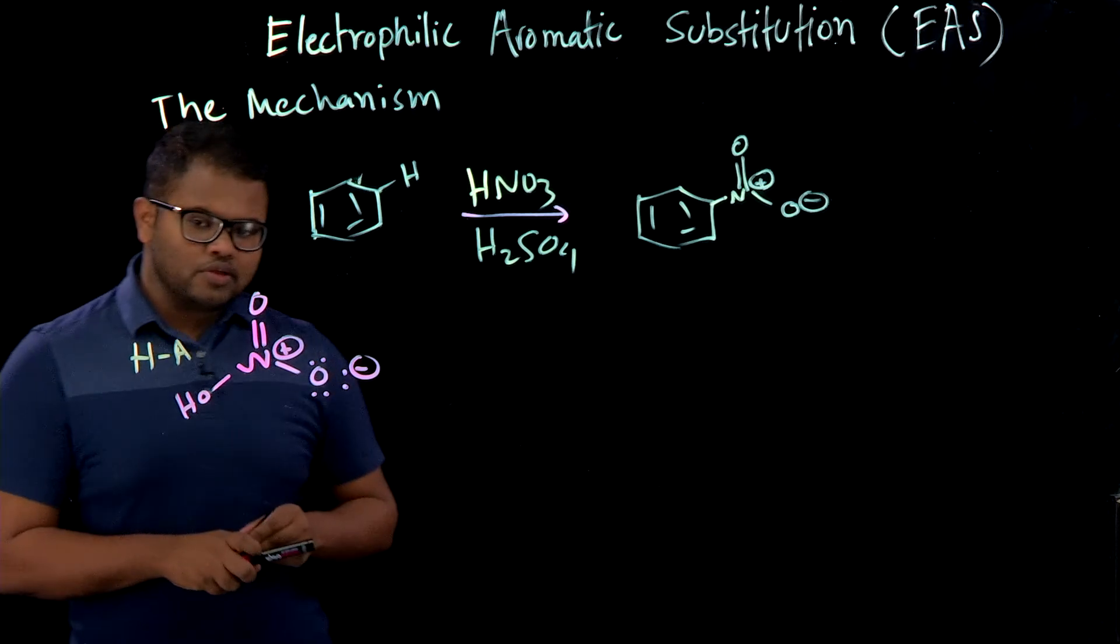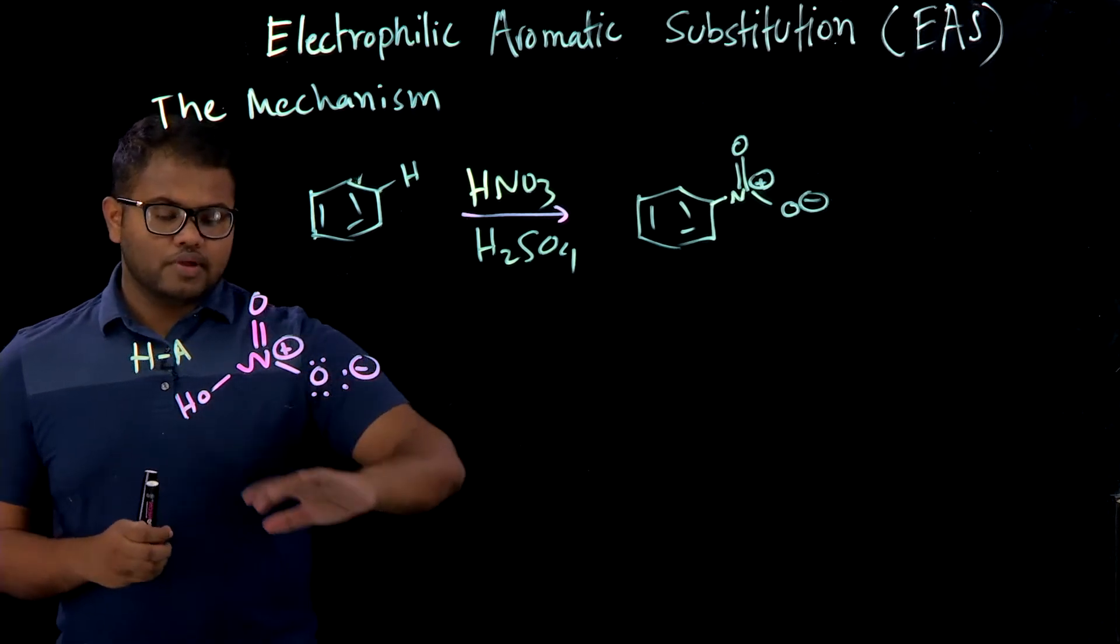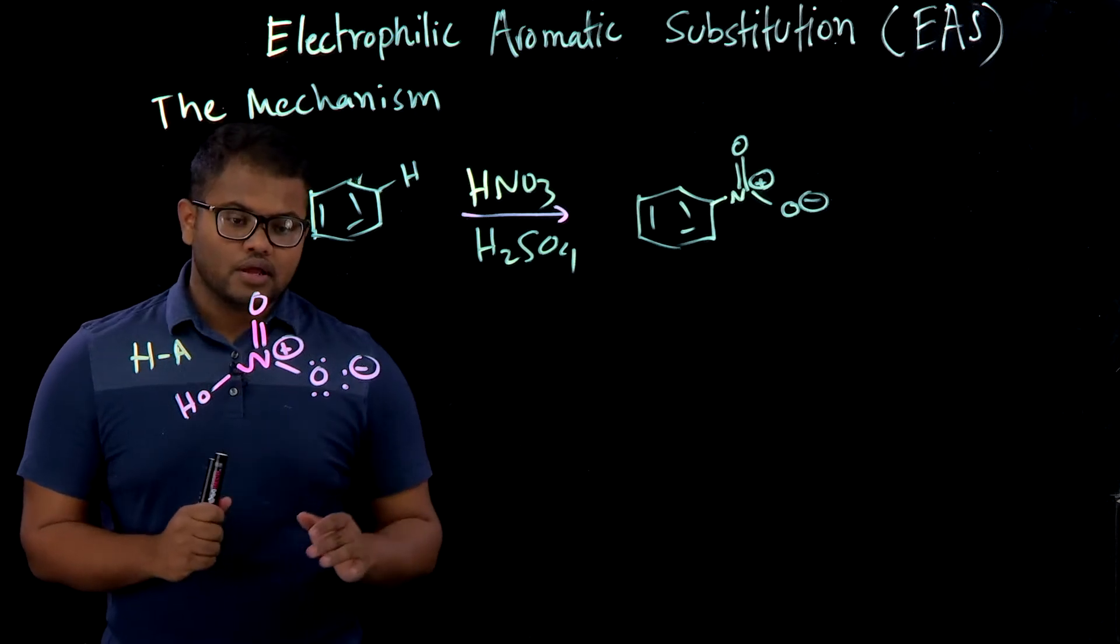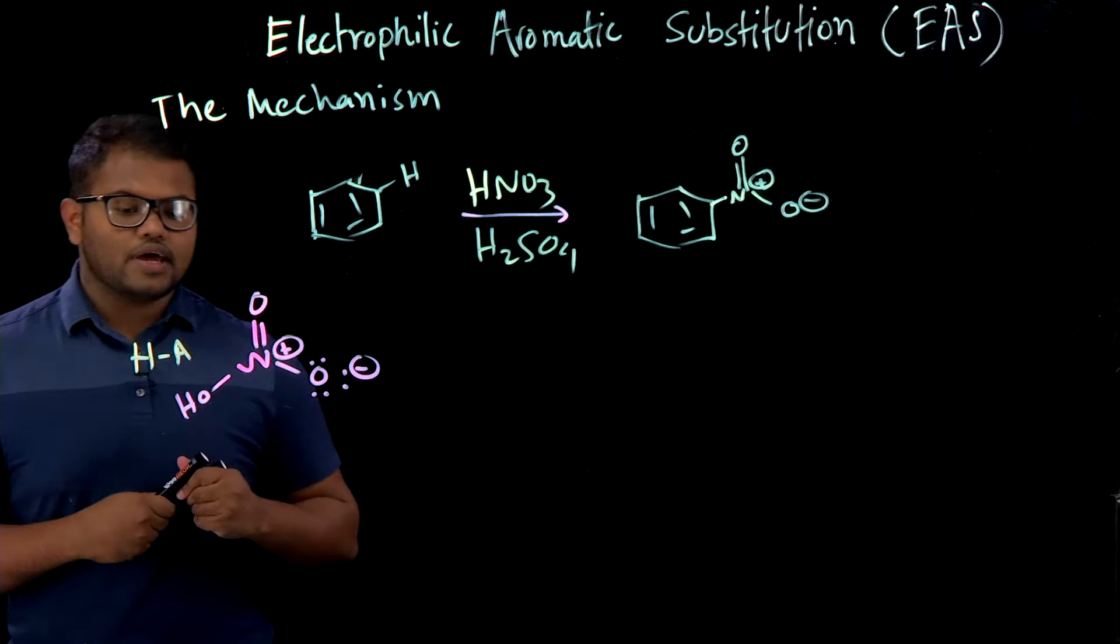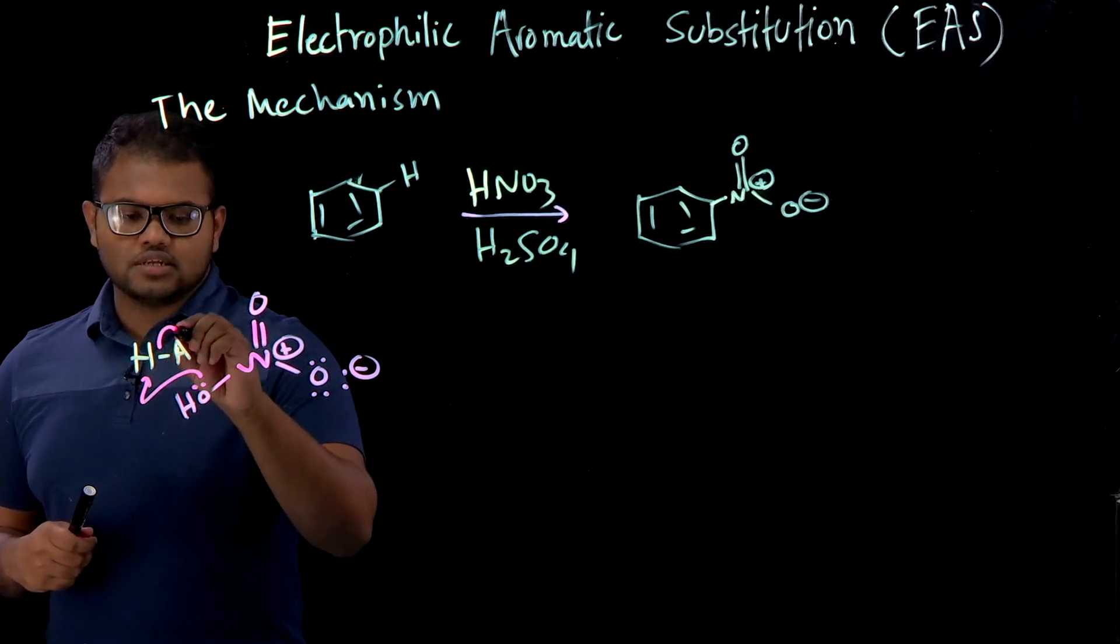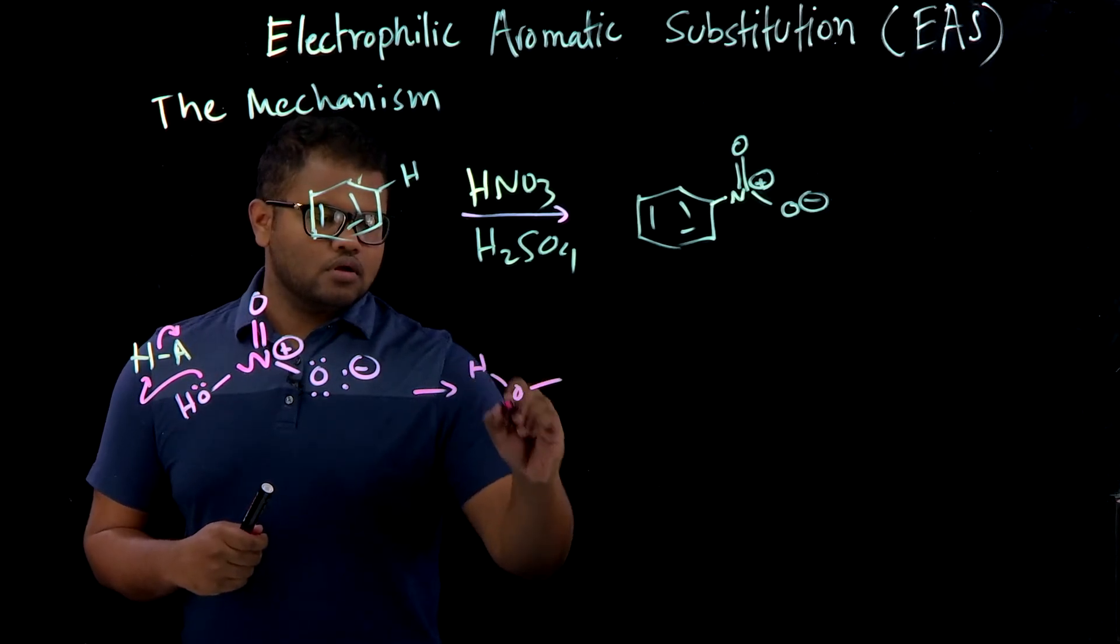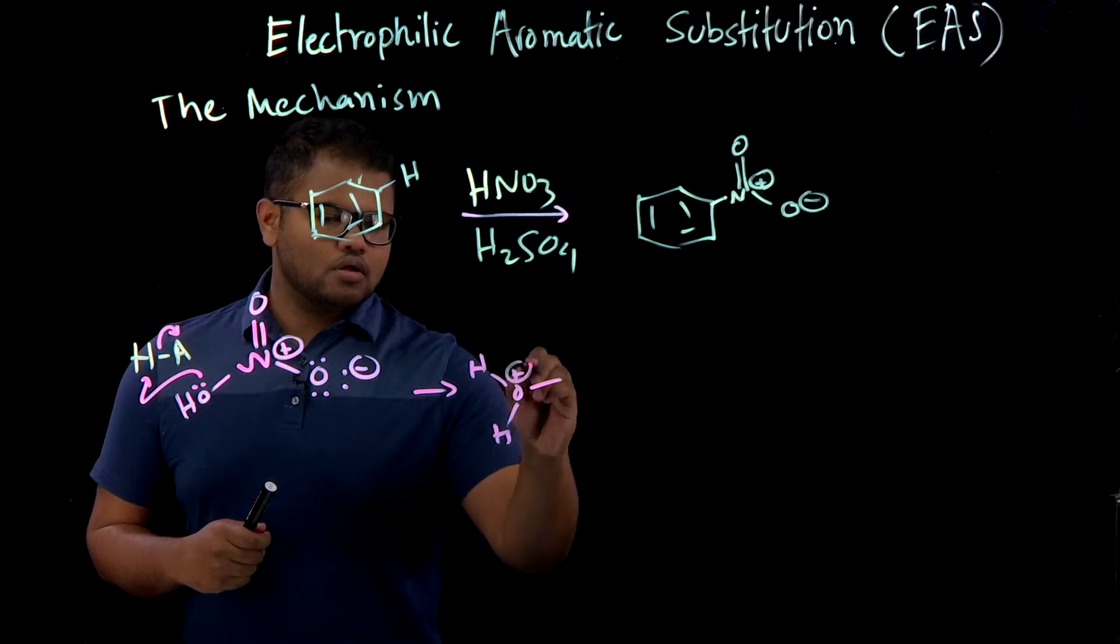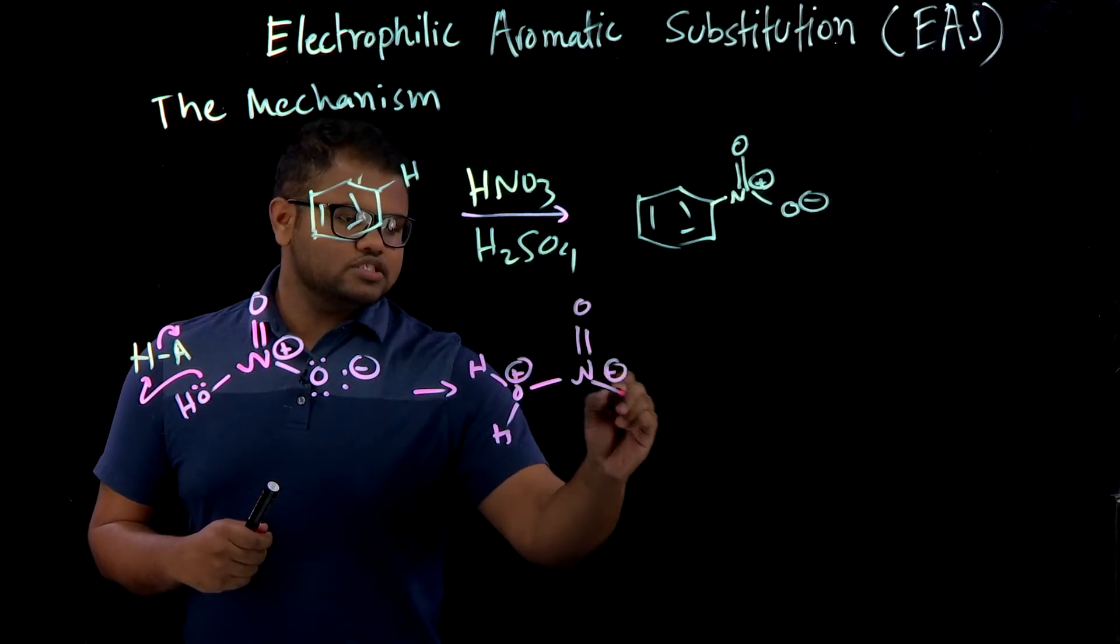So most of the time what you think is that this negative charge would pull the proton off to become positive and favorable. However, that does happen 99% of the time. However, that 1% of the time what's going to happen is this OH group is going to pluck the proton off from the acid to give you this intermediate.